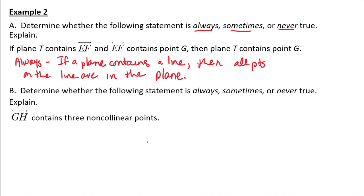And then determine whether the following statements sometimes are always never true. I guess I didn't have to have those directions again. Line GH contains three non-collinear points. That doesn't make any sense because non-collinear points means not the same line. So this is never true.